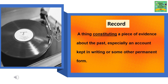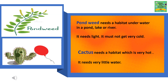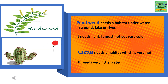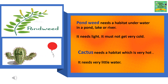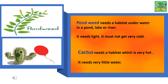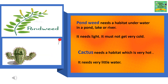Pond weed needs a habitat under water in a pond, lake, or river. It needs light and must not get very cold. Cactus needs a habitat which is very hot and it needs very little water.